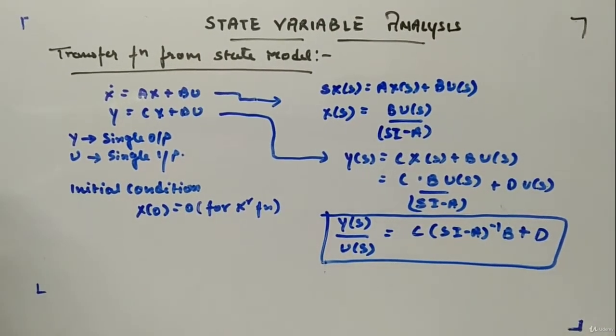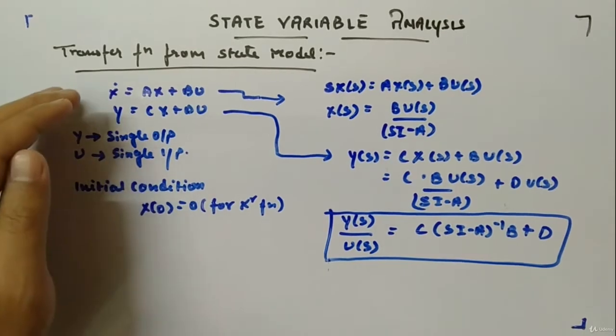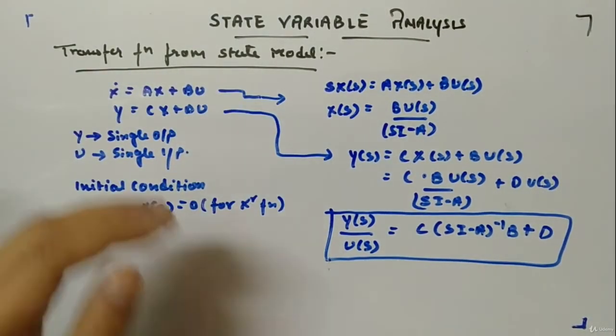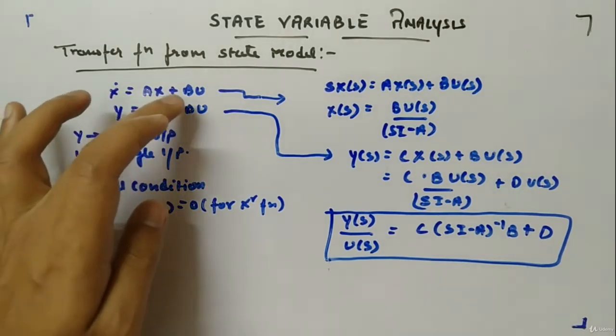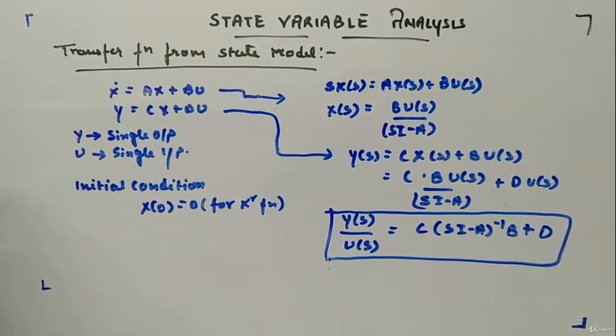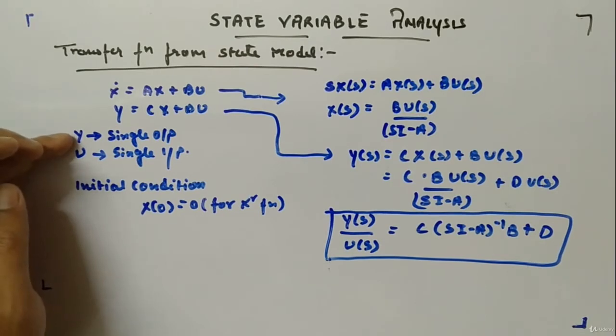Okay, so let's see how you can detect transfer function from a state model. We know about the equations: x dot is equal to Ax plus Bu, and y is equal to Cx plus Du. Here I am considering y is single output, u is single input.